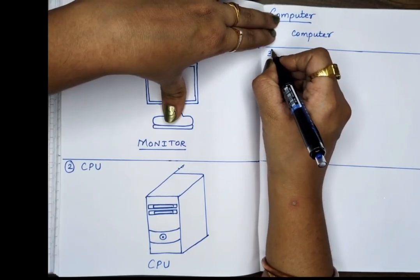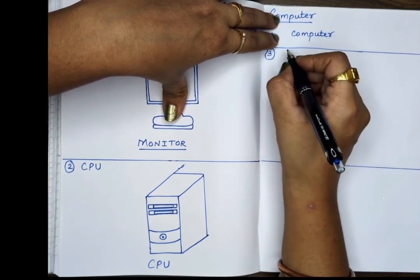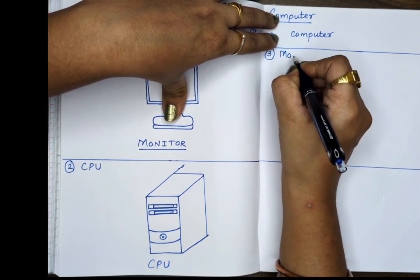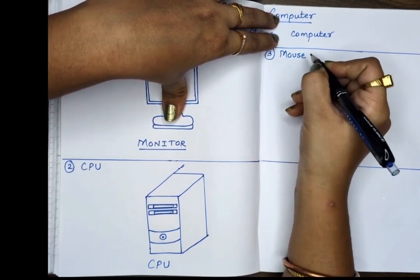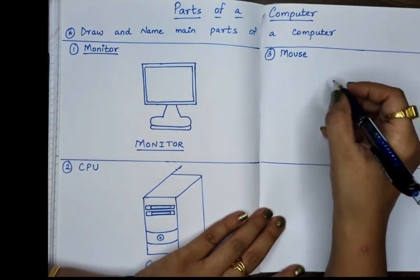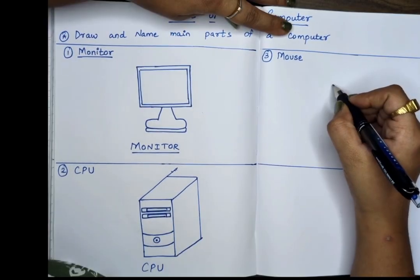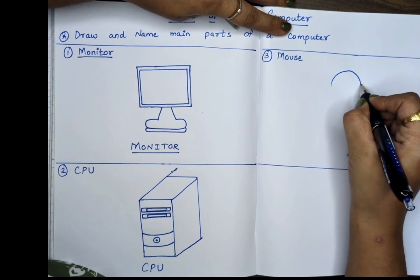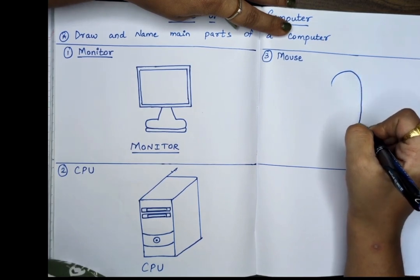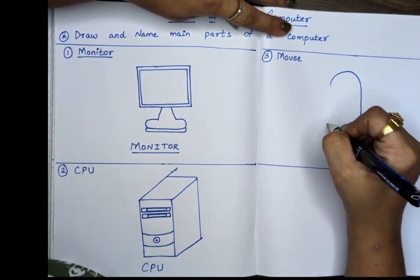Let's move on to our third part, mouse. Now let's draw the mouse. M-O-U-S-E. Mouse. The mouse has two or three buttons. We use it to point, click, draw and even play games. It helps us select things on the monitor.